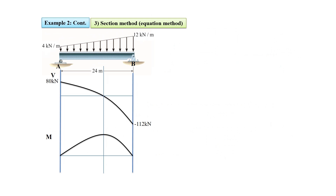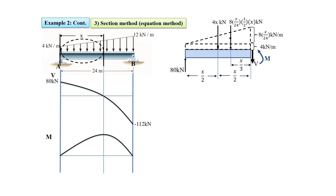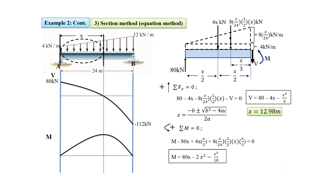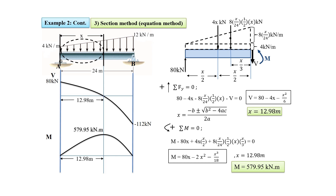We section the beam at distance X and apply equilibrium equations to define V and M as functions of X. We draw the free body diagram of this section, replacing the trapezoidal loading with rectangular and triangular distributions. The intensity of the triangular load at the section is found by proportion. From equilibrium, the sum of all forces in the Y direction equals zero, giving us V as a function of X. Choosing the positive root, X equals 12.98 meters. Sum of all moments equals zero, giving us M as a function of X. Therefore, the moment at X equals 12.98 meters is 579.95 kilonewton meters. From the diagram, the maximum shear force and maximum moment are 112 kilonewtons and 579.95 kilonewton meters, respectively.